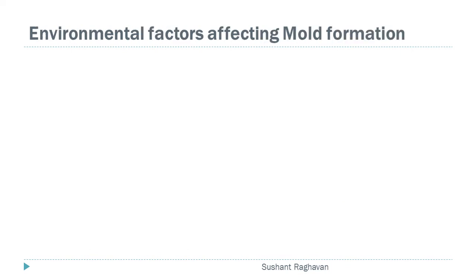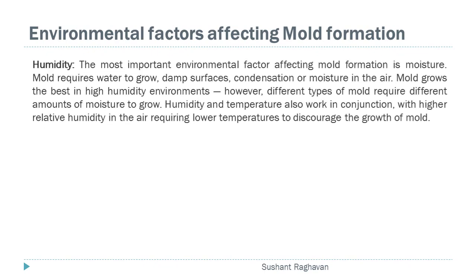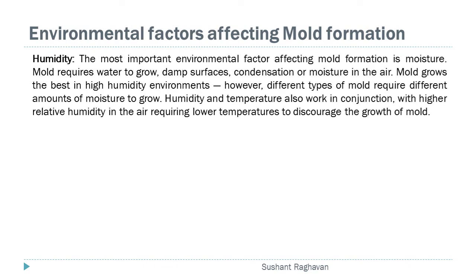Environmental factors affecting mold formation — Humidity. The most important environmental factor affecting mold formation is moisture. Mold requires water to grow: damp surfaces, condensation, or moisture in the air. Mold grows best in high humidity environments; however, different types of mold require different amounts of moisture to grow. Humidity and temperature also work in conjunction, with higher relative humidity in the air requiring lower temperatures to discourage the growth of mold.